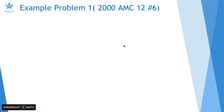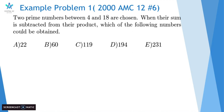The first one is 2000 AMC 12 number 6. Two prime numbers between 4 and 18 are chosen. When the sum is subtracted from their product, which of the following numbers could be obtained? A) 22, B) 60, C) 119, D) 194, and E) 231.